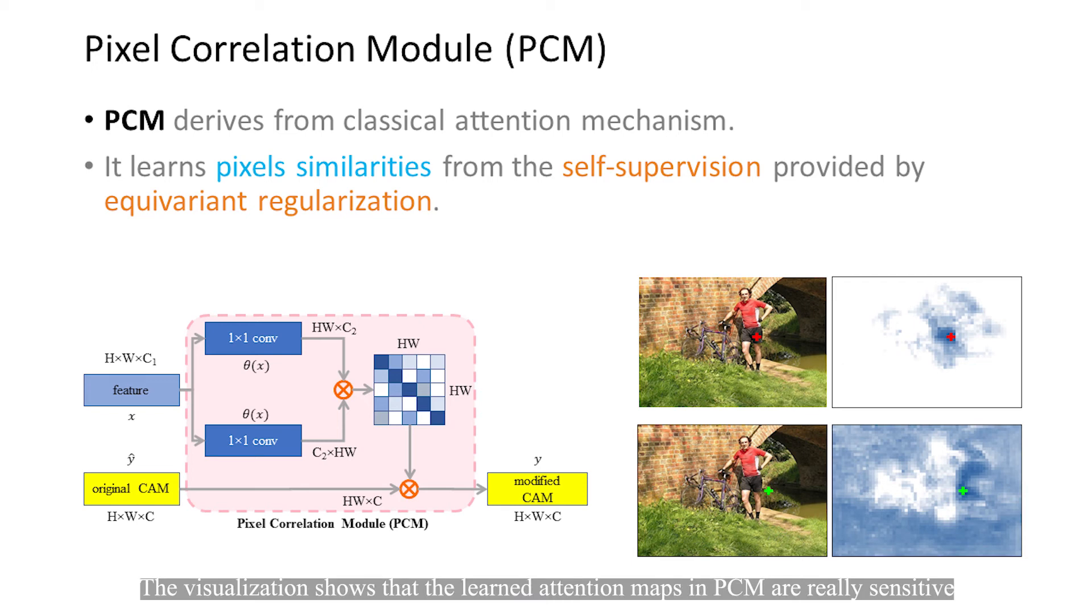The visualization shows that the learned attention maps in PCM are locally sensitive, even when the selected pixels are relatively close in spatial.